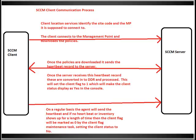Now here is the flowchart. The same steps are shown here in diagram form. The ICCM client — your laptop or desktop — communicates with the ICCM server. The first step is the client locating the service to identify the site code and management point, which is generally done via Active Directory. When the client sends a discovery request, Active Directory responds with the site code and management server details.